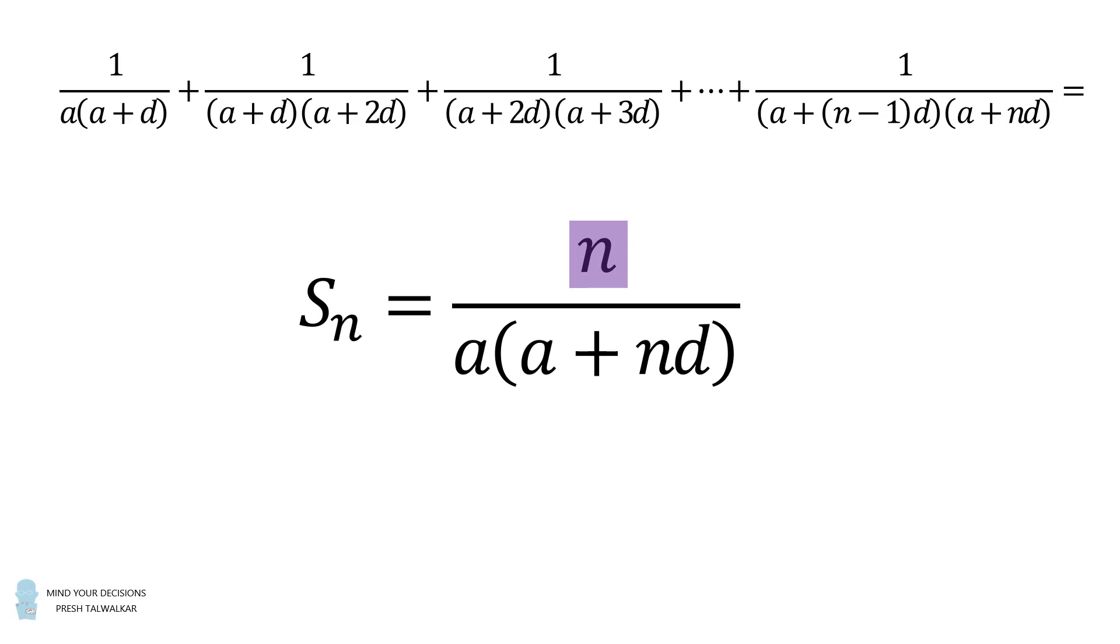And this is exactly the formula we want. n is the numerator, that's the number of terms in the sum. Then a is exactly that very first factor. And then a plus nd is the very last factor, you know, the largest number in the sum. So that's it, that's why this formula works.